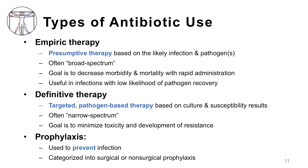Empiric therapy is presumptive therapy based on the likely infection and pathogens involved. This is often broad spectrum, which we will cover in the next slide. The goal is to decrease morbidity and mortality with rapid administration of a potentially effective antibiotic. These types of antibiotics are also useful in infections in which there's a low likelihood of pathogen recovery during the clinical course.